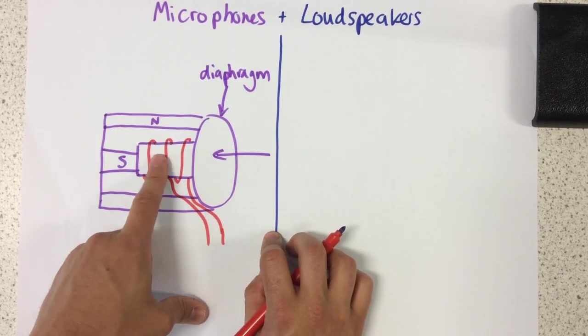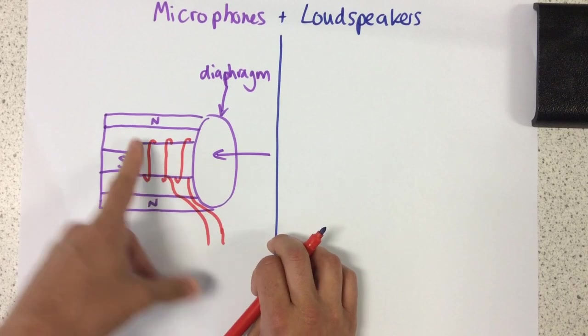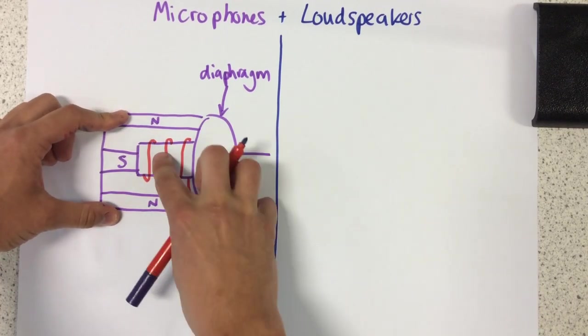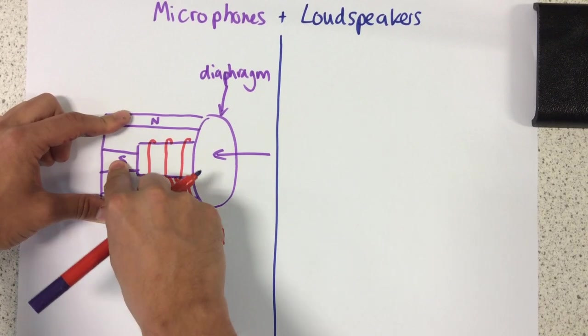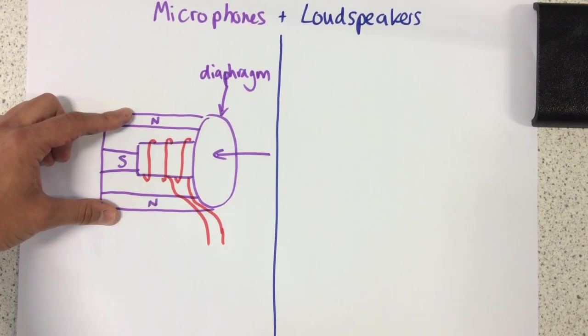Our coil of wire moves within our magnetic field. As you can see, this coil is fitted around this pole of the magnetic field and we have this pole of the magnetic field there.